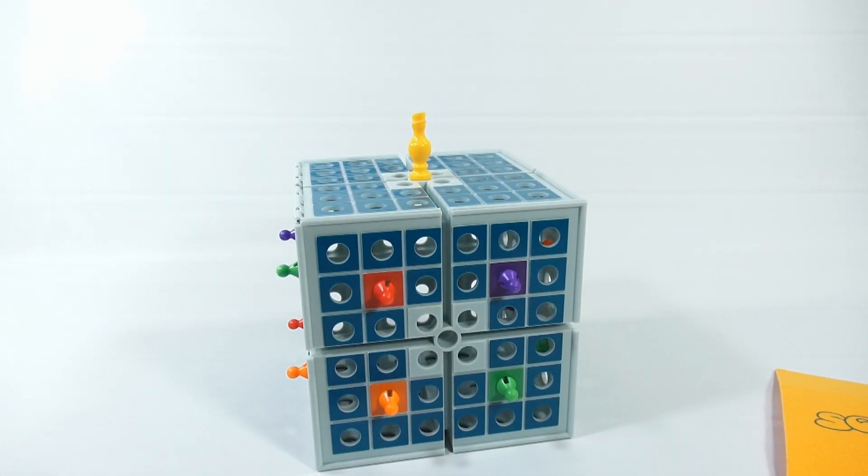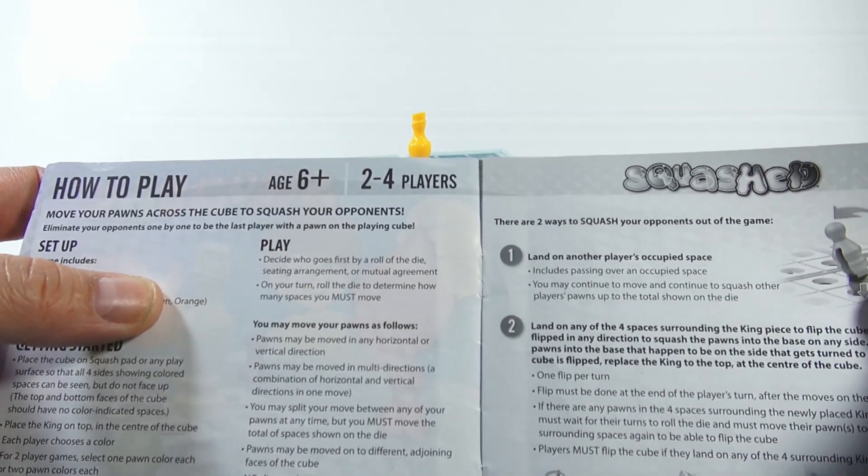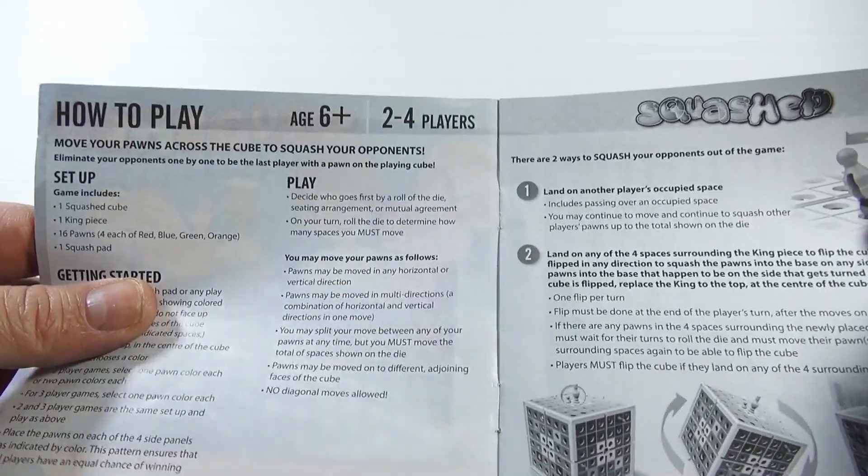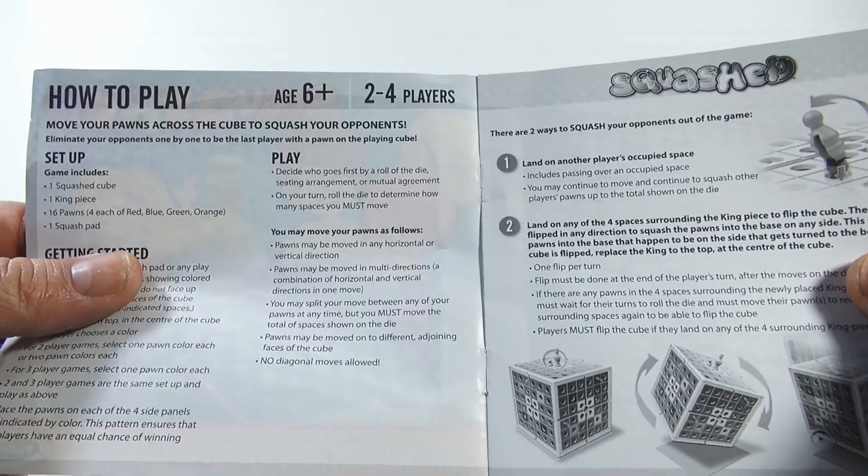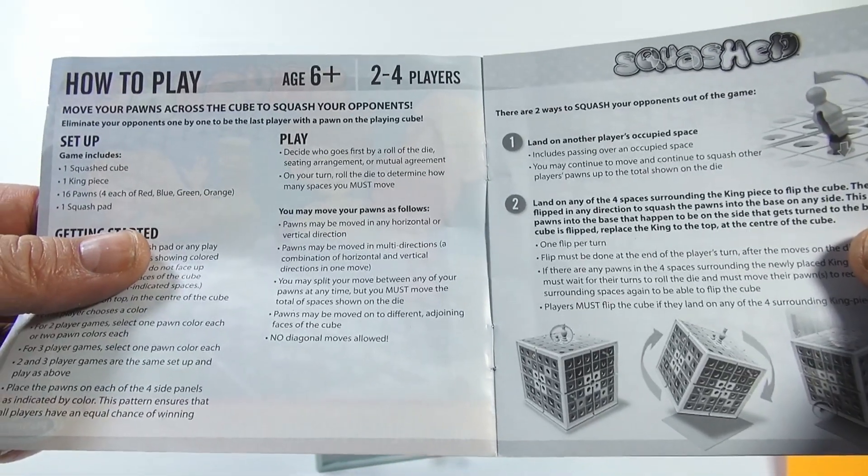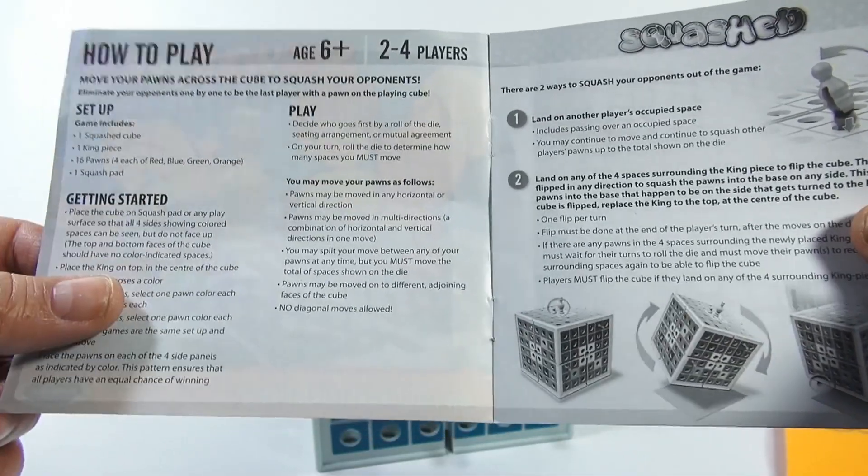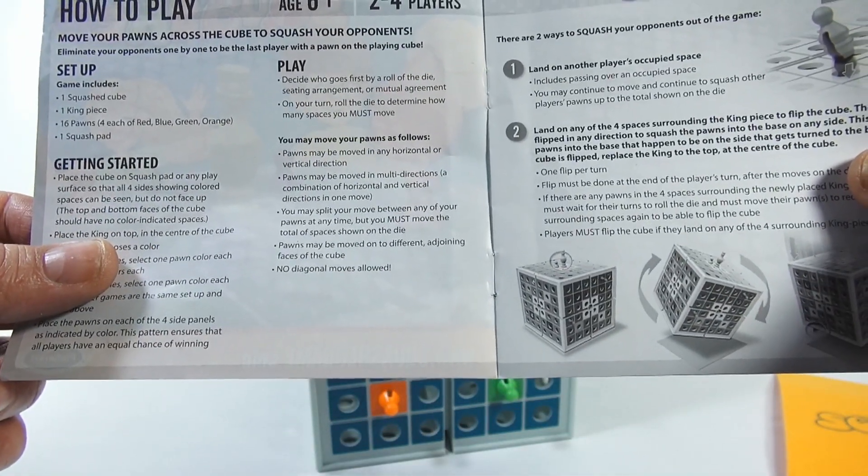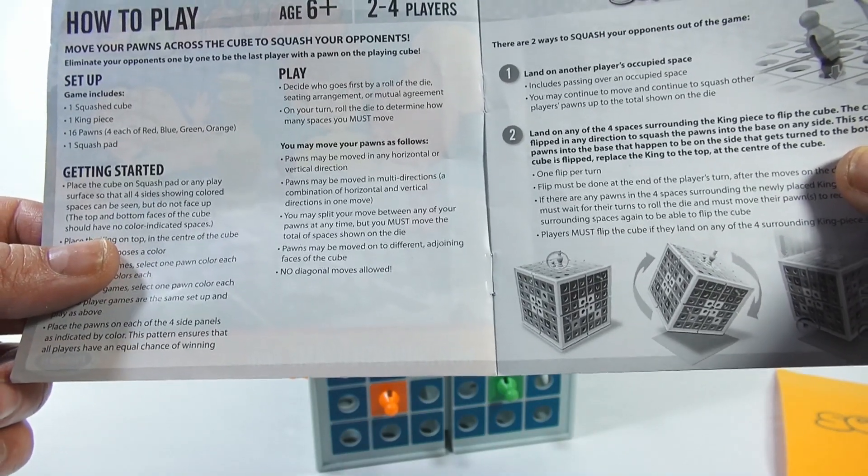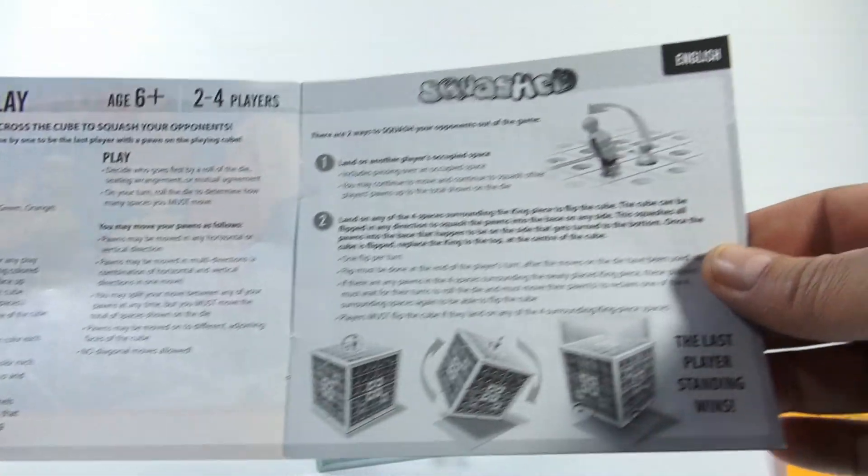For two players, for three players, place the pawns. Did that. Play. Decide who goes first. On your turn, roll the die to determine how many spaces you must move. You may move your pawns as follows. Pawns may be moved in any horizontal or vertical direction. Pawns may be moved in multi-directions. A combination of horizontal and vertical directions in one move. You may split your move between any of your pawns at any time, but you must move the total of spaces shown on the die. Pawns may be moved onto different adjoining faces of the cube. No diagonal moves.